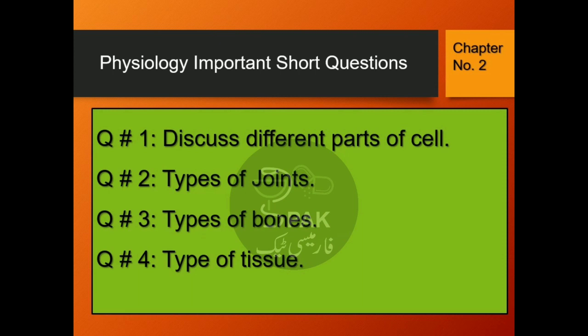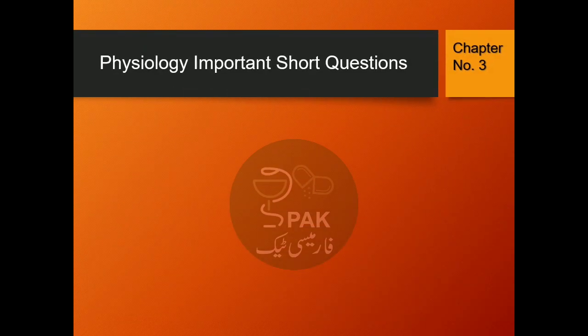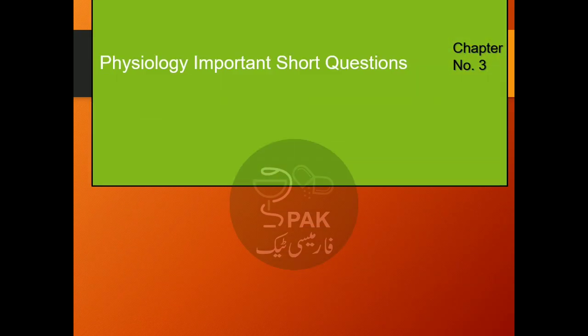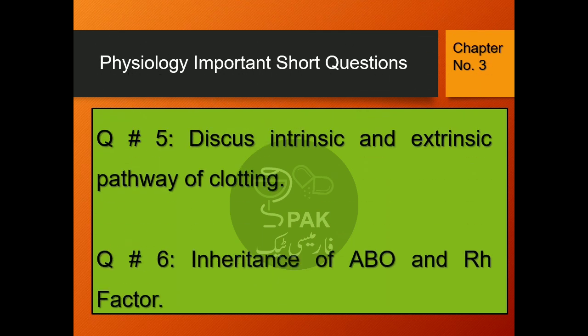Question number 4: Type of tissue. Question number 5: Discuss intrinsic and extrinsic pathway of clotting.